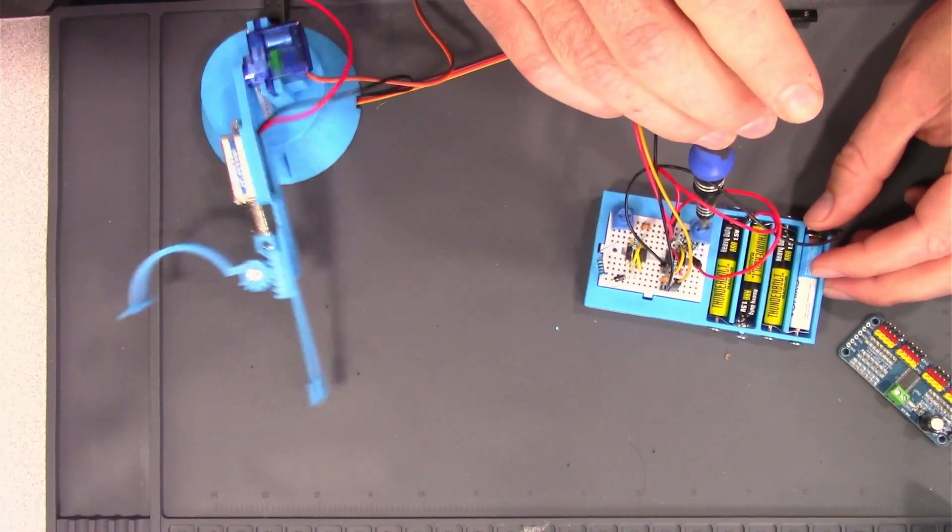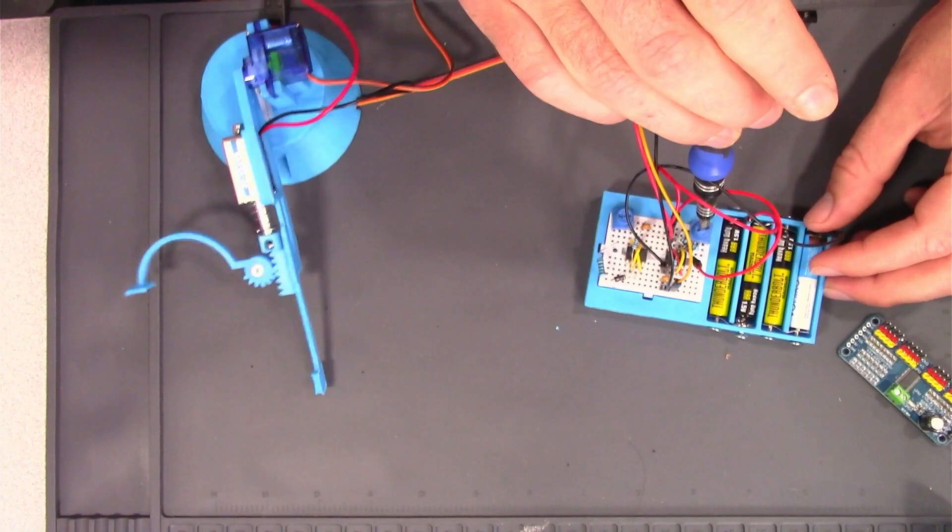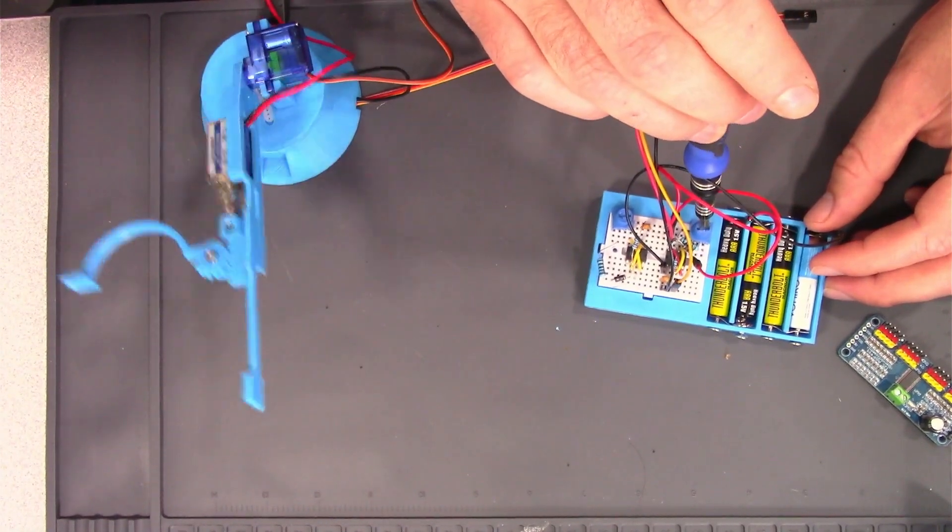The signal that comes from the 555 timer isn't perfect, so you'll see that the robot arm jitters a little bit.